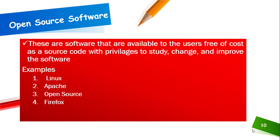Next we have open source software. Open source softwares are available to users free of cost as source code, with the privileges to study, change, and improve the softwares. These softwares are available on the internet — you can download them in the form of source code, and you can study, change, and improve them.